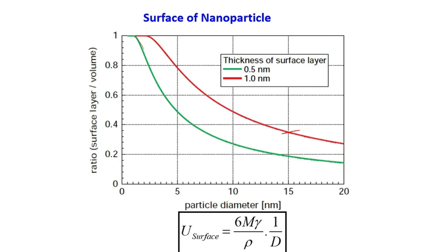Most mathematical treatments do not consider this finite surface layer thickness — they assume a sharp interface with just one layer of surface atoms, which is incorrect. Please understand that in all your mathematical treatments, this finite thickness must be built in. You can do the analysis at home as homework. The key takeaway: a physical surface layer is not a mathematical thin line but a finite thickness T of interacting atoms.